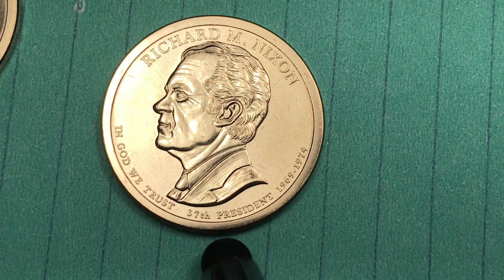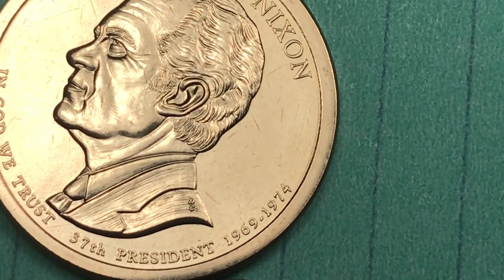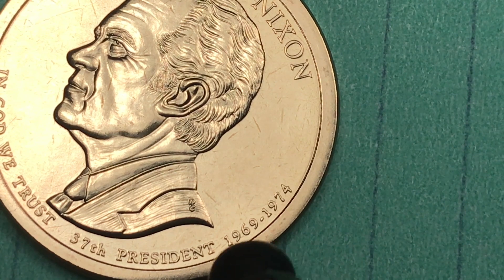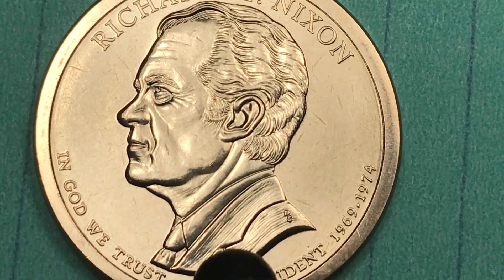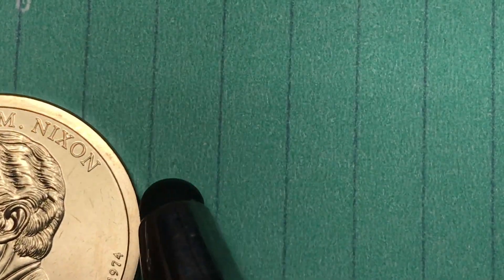Down here in front of him, 37th President underneath him, and then over here they'll put the years that the president served, and this was 1969 to 1974. These coins have some of their information on the edge of the coin.